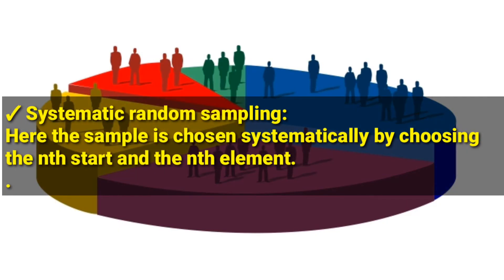The second type is called systematic random sampling. Here the sample is chosen systematically by choosing the nth start and the nth element. For example, you choose item number two and every second item is chosen. In a very big class, on every desk you would be choosing the second student, and those are the students that form your sample.